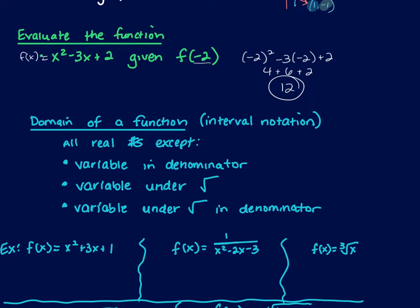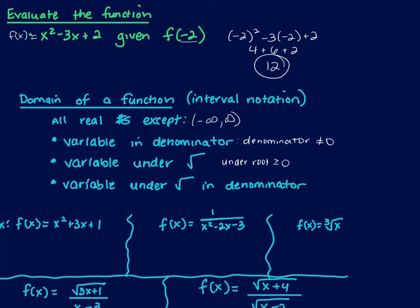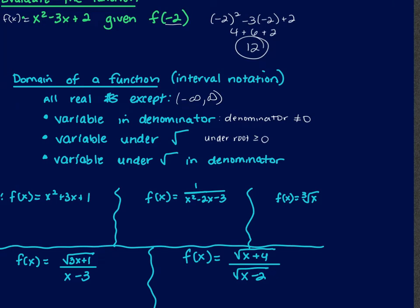Then came domain of a function from an equation — algebraically figuring these out. The domain is all real numbers (negative infinity to positive infinity) except if one of three cases happens: there's a variable in the denominator (set denominator not equal to 0); there's a variable underneath the square root (set what's under the root greater than or equal to 0); or there's a variable under the square root in the denominator (set what's underneath the root strictly greater than 0).